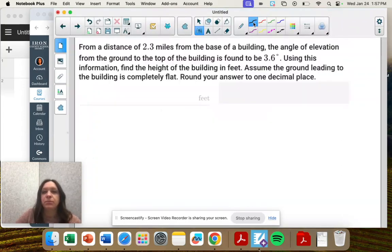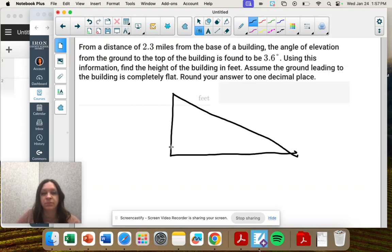All right. So again, always start with the right triangle. And then let's try and label what we're given. So the distance of 2.3 miles from the base of a building. So the tall part is usually the building, right? Here's our building.